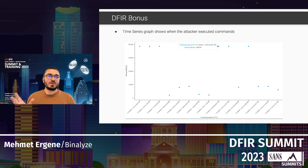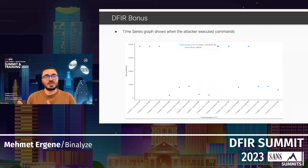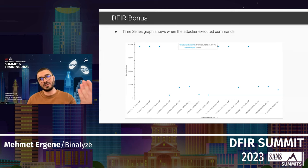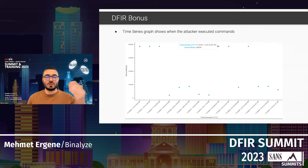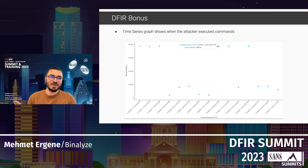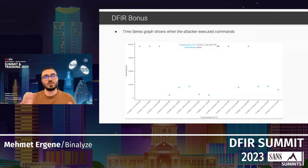As a DFIR bonus: once you've found the beaconing traffic or know the IOCs, generate a time series graph of that source-destination pair based on received bytes. Since the beacon receives commands from the C2 operator, spikes in received bytes show exactly when commands were issued. With those precise timestamps, you can pivot to the compromised host's logs around that time to see what happened — which is extremely valuable for forensic investigation.